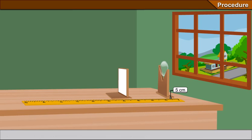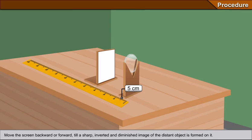Move the screen backward or forward till a sharp, inverted and diminished image of the distant object is formed on it.